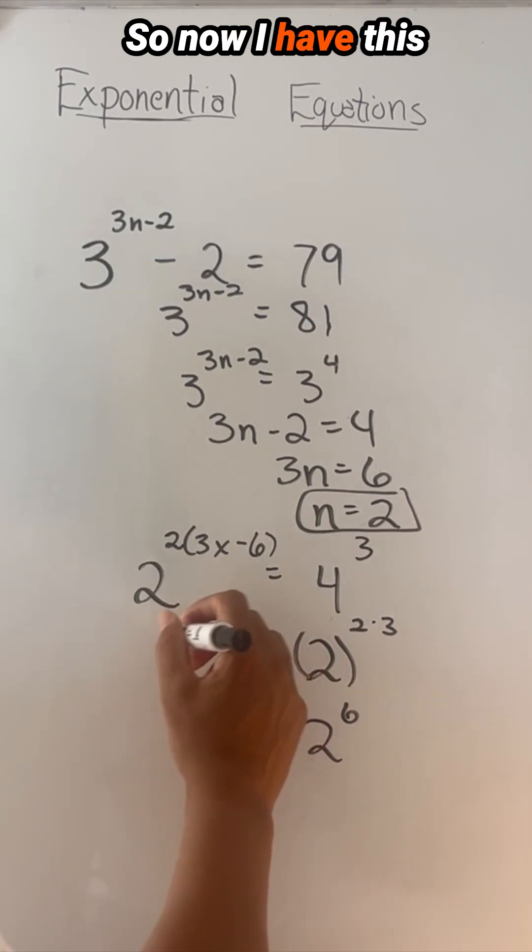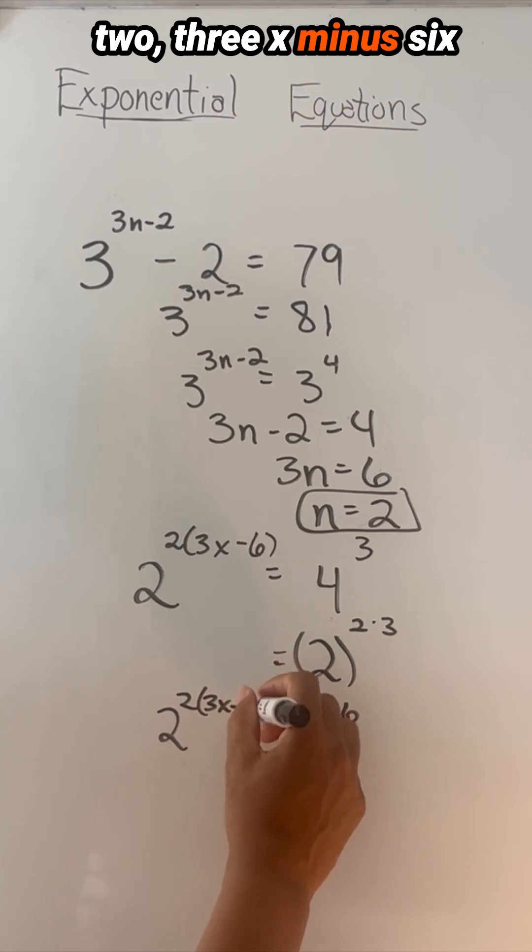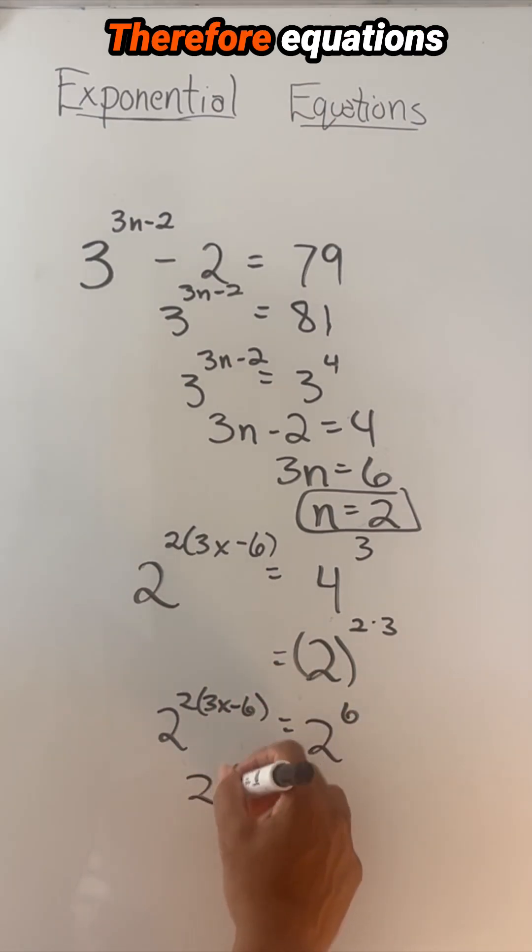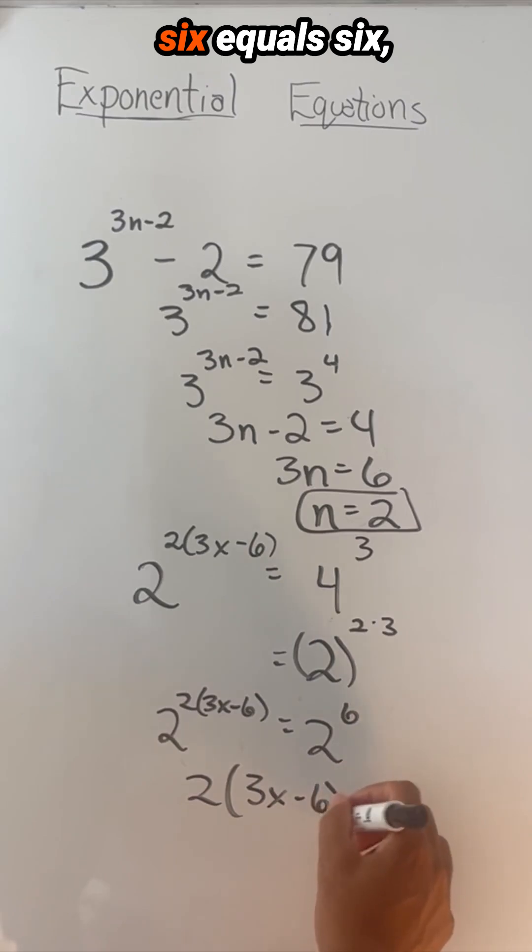So now I have this same thing. Two times two, three, x minus six. Bases are the same. Therefore, exponents are the same. Three x minus six equals six.